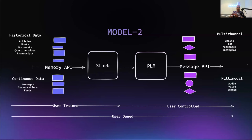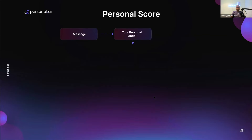On the output side there is multi-channel — email, text messenger, Instagram — you can deploy it anywhere. We are moving closer to the multi-modal concept: not only text but also audio, voice, and images. Each PLM and each AI response on PLM has something called a personal score. When a message is sent to a personal model, it determines if it can reply and construct a response based on your PLM data without relying on the LLM. If it can't, it uses external sources, which is reflected in the personal score.